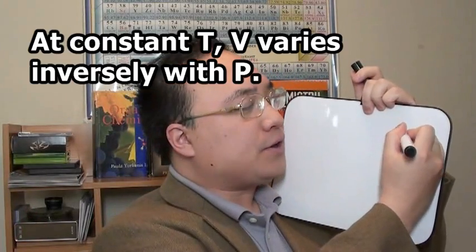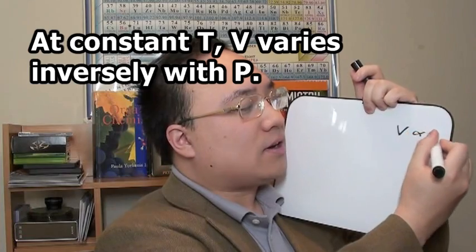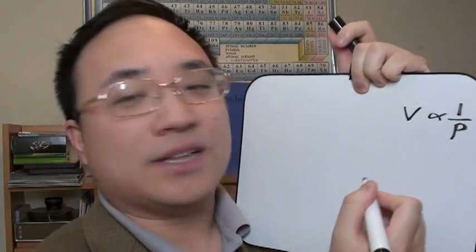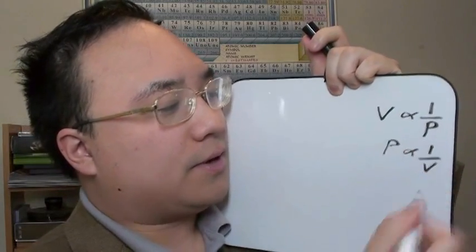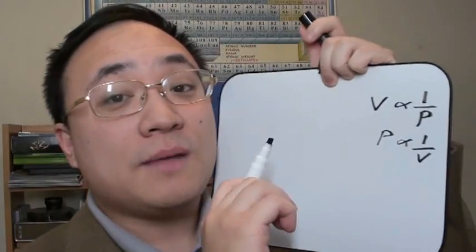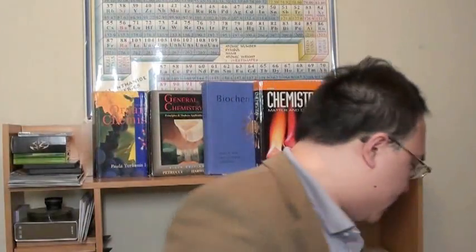He actually worked a lot with pressure and volume. His research concluded that in an apparatus, a system, a pump, a tank, whatever, at a constant temperature, the volume and the pressure are inversely proportionate to each other. As one goes up, the other one goes down. Which makes sense, like I take this water bottle, for instance. With more pressure, less water can go inside, less volume. But more volume means less pressure.